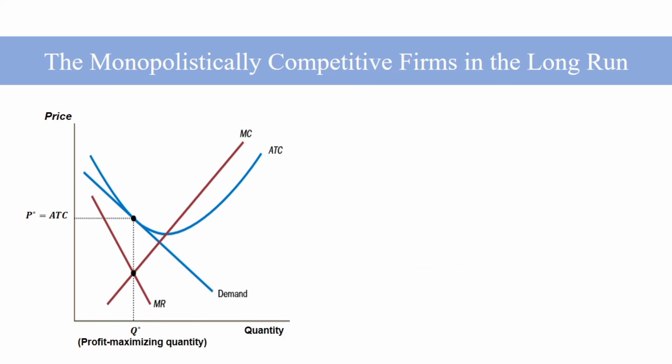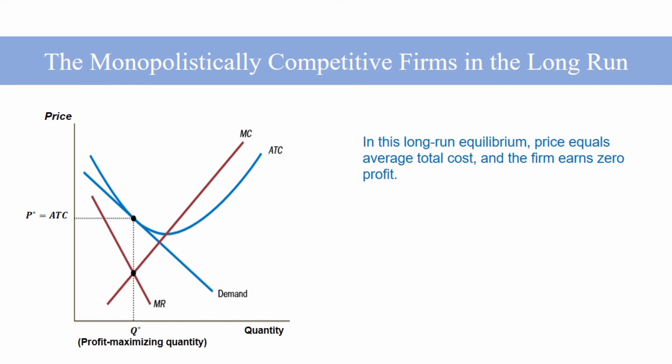To sum up, two characteristics describe the long-run equilibrium in a monopolistically competitive market. First, as in a monopoly market, price exceeds marginal cost. This conclusion arises because profit maximization requires marginal revenue to equal marginal costs, and because the downward-sloping demand curve makes marginal revenue less than the price. As in a competitive market, price equals average total cost. This conclusion arises because free entry and exit drive economic profit to zero.